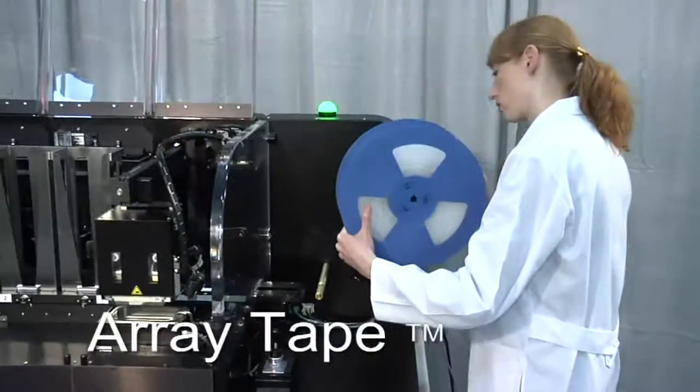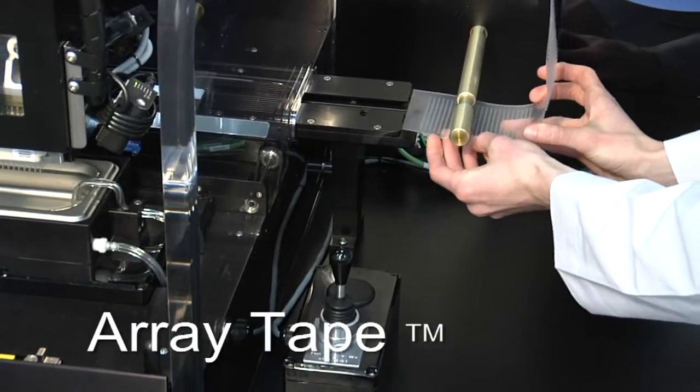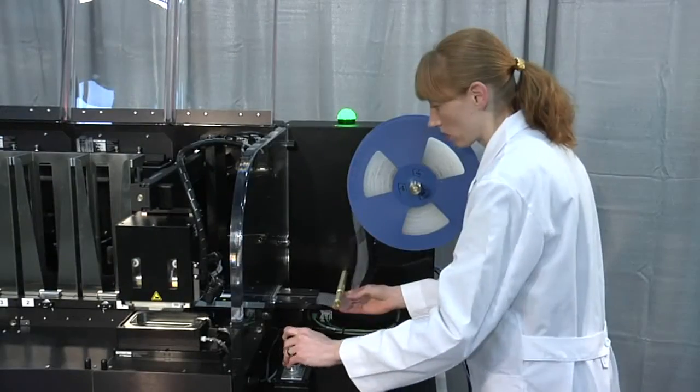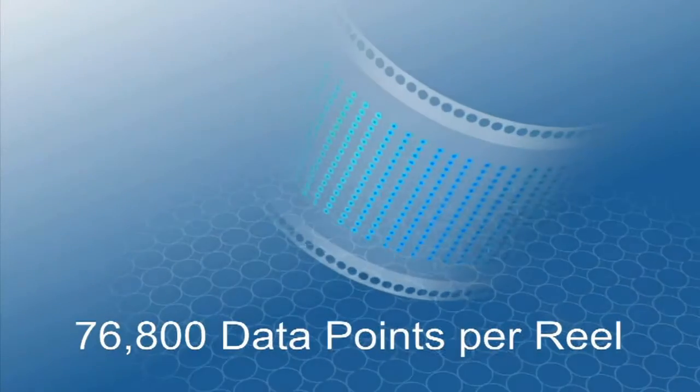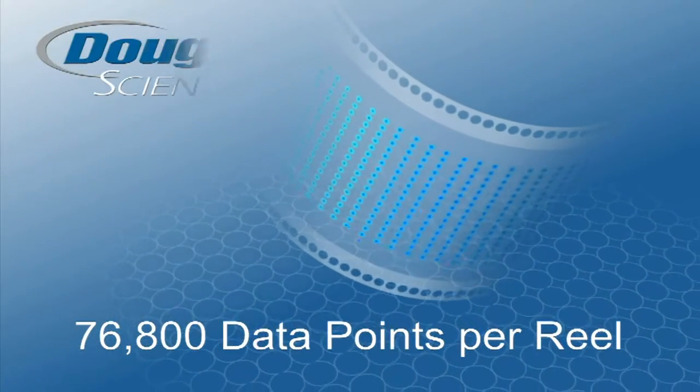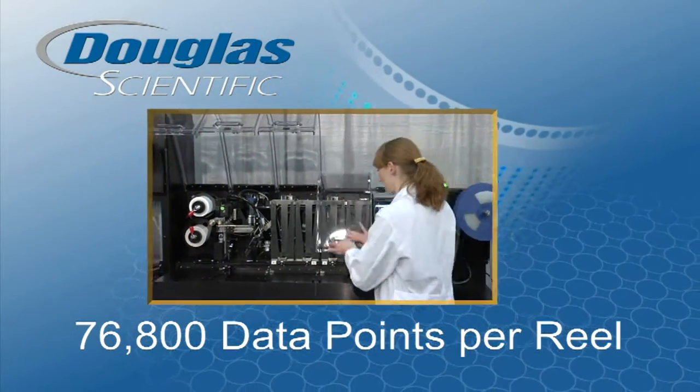Array tape: a flexible microplate replacement in the form of a continuous polymer strip, serially embossed with reaction wells in customized volumes and formats. With 76,800 data points per reel, the Douglas Scientific platform enables you to analyze hundreds of thousands of data points in a work day.